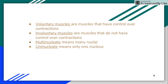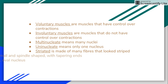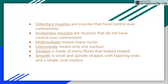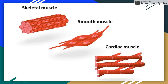Striated muscle is made of many fibers that look striped, and smooth muscle is the smallest, with a spindle shape with tapering ends and a single oval nucleus. This is a picture of the three types of muscle tissue.